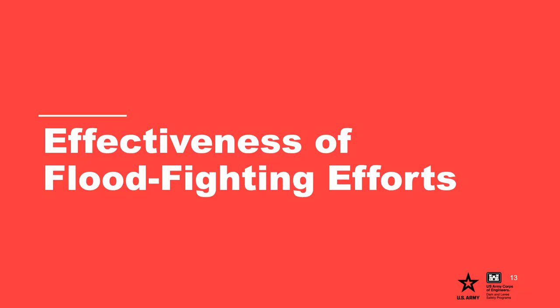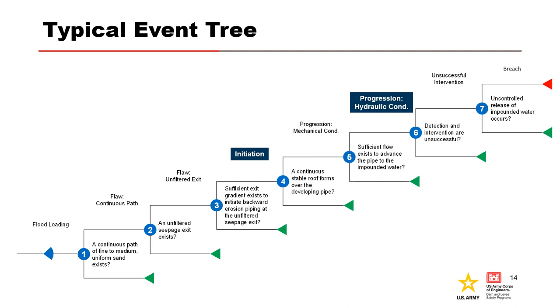The question turns to this: just how integral were the efforts at Buck Chute in preventing failure? Re-examining the backward erosion piping evaluation from part one of this case history can provide insight. Here's the typical event tree for backward erosion piping. The flood-fighting efforts primarily affected the initiation and hydraulic condition for progression nodes within the tree. Typically, intervention is accounted for in the risk estimate through the unsuccessful intervention node; however, since this case history examines events that occurred in the past, it's prudent to look at these nodes separately.